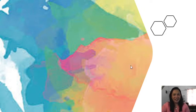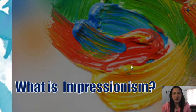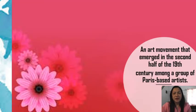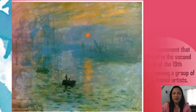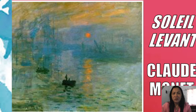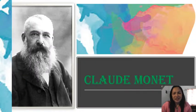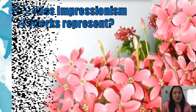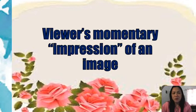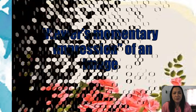Good morning. Let's continue our discussion for the review. Yesterday we discussed what impressionism is. We defined impressionism as an art movement that emerged in the second half of the 19th century among Paris-based artists. An example given was Claude Monet's 'Soleil Levant' — in English, 'Sunrise.' Based on our discussion, impressionism artwork represents the viewer's impression of an image.